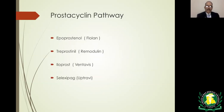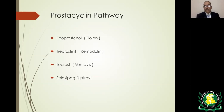Prostacyclin pathway drugs include epoprostenol (Flolan), treprostinil (Remodulin), iloprost (Ventavis), and selexipag (Uptravi), which is oral. The first two are given by IV infusion; treprostinil is also given by continuous subcutaneous infusion; and iloprost Ventavis is given by inhalation.